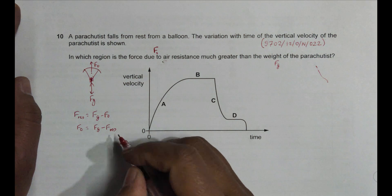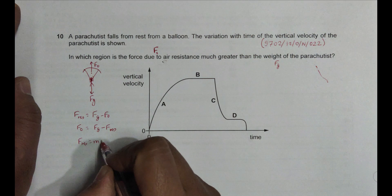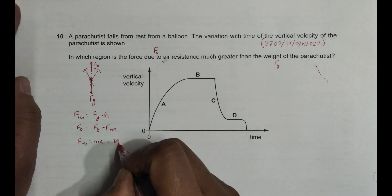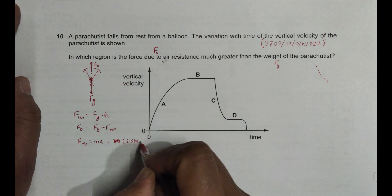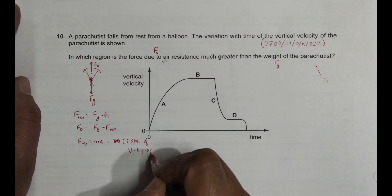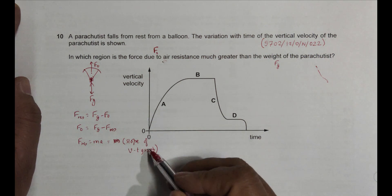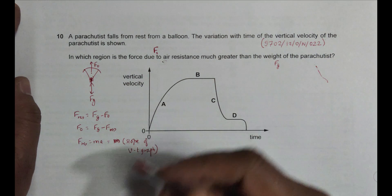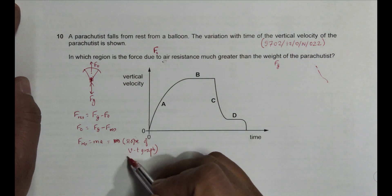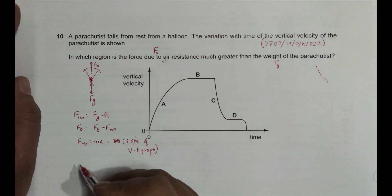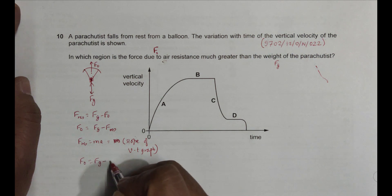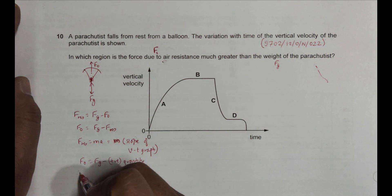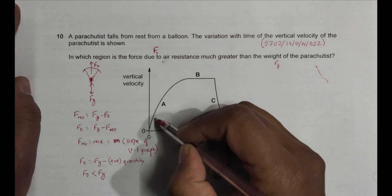The force of resistance and the acceleration of the parachutist are proportional. The resultant force equals ma, and acceleration a equals the slope of the velocity-time (VT) graph. In region A the slope is positive, so F resultant is positive. That means fo equals Fg minus some positive quantity, therefore fo is less than Fg in region A.